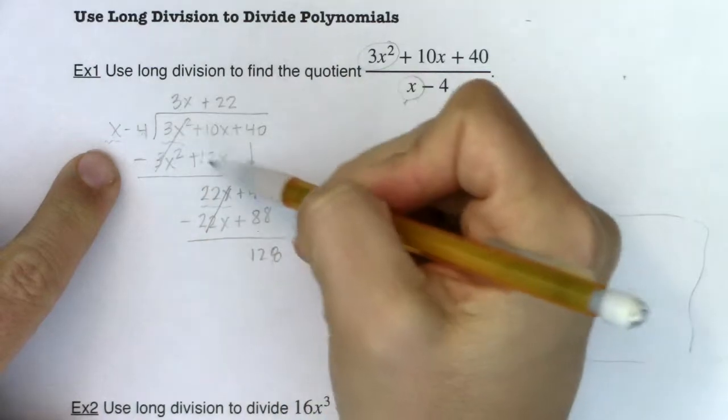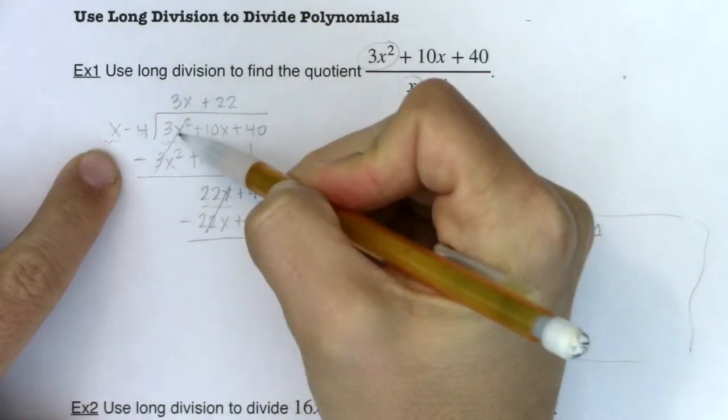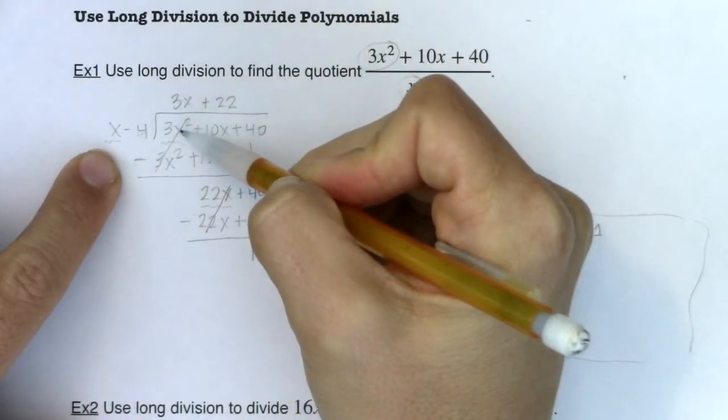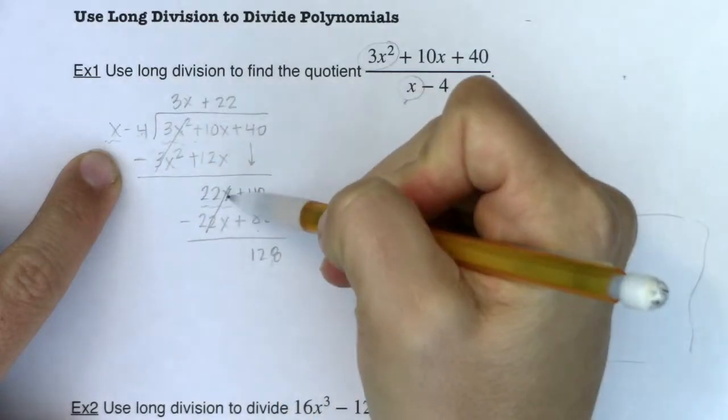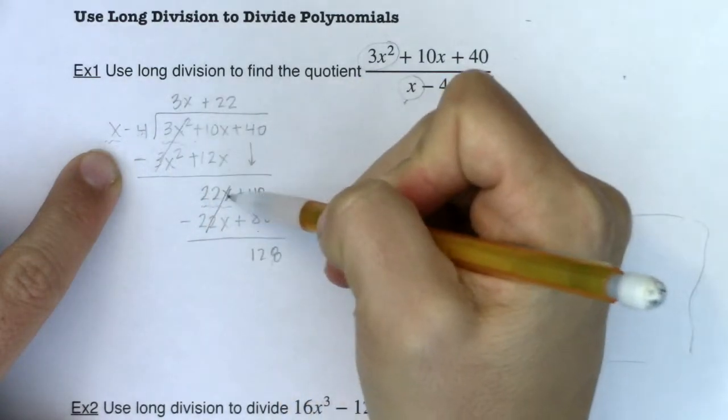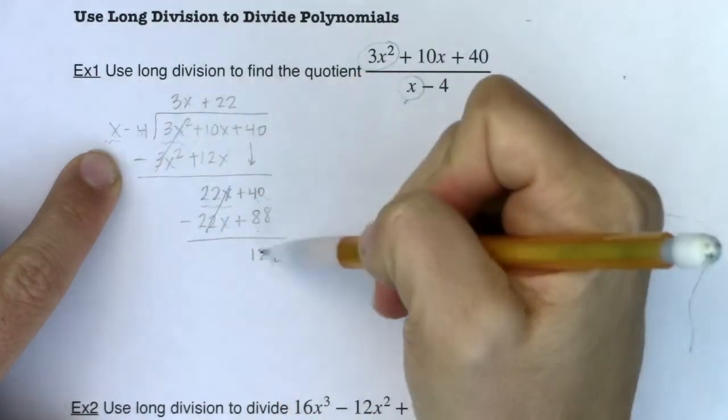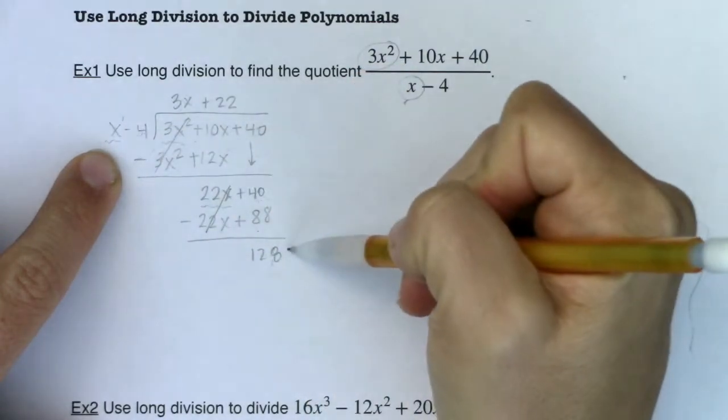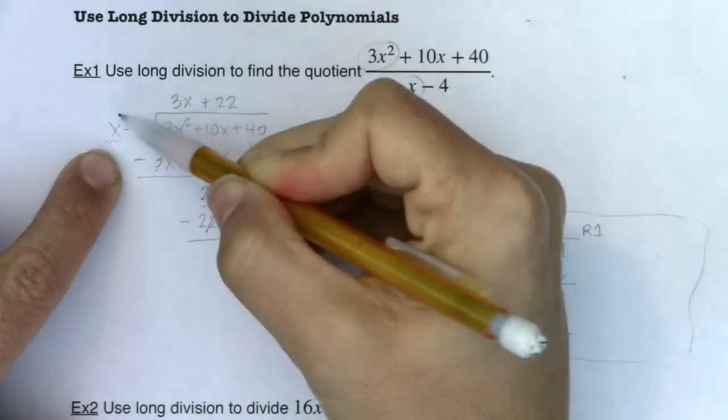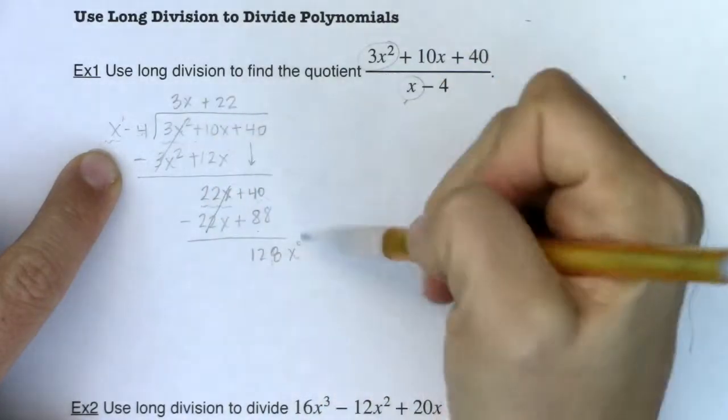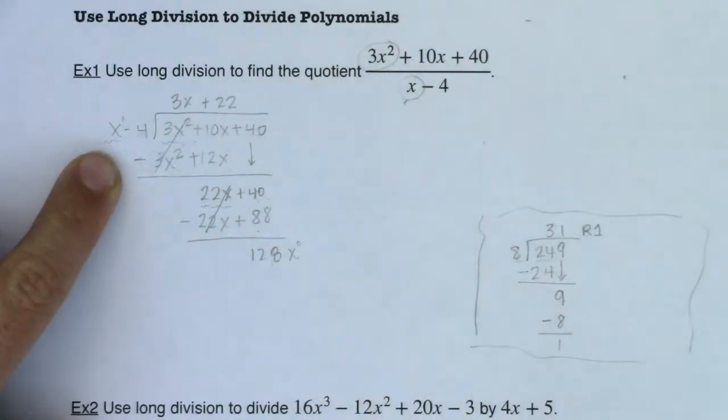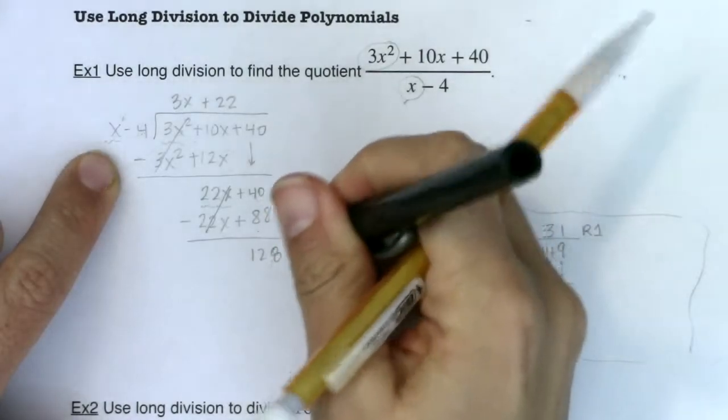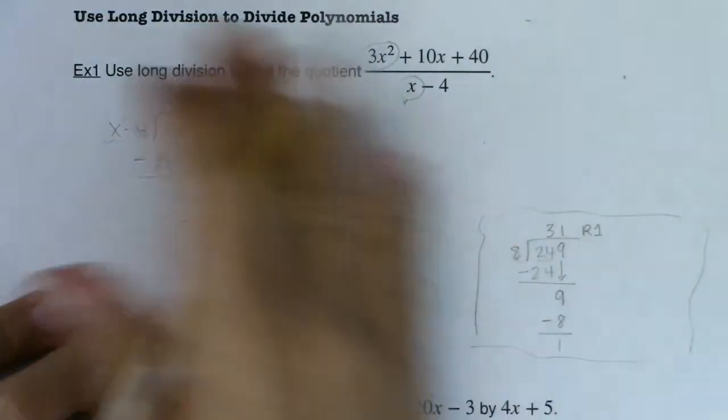So what I mean by that, if you looked at our first division, we went x into x squared. This one was larger, so I kept on going. Here we went x into x. They were tied, kept on going. Here I went x into a constant. This had a higher power of x. This was x to the 1. This is technically x to the 0. So when this power here is higher than this power here, you know you can stop. So I'm at the stopping point.